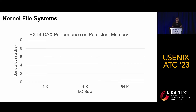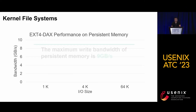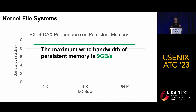We use a concrete example to illustrate this overhead. We run a traditional kernel file system named EXT4 on top of Intel Optane Persistent Memory, specifically the DAX version of EXT4, which leverages the byte-addressability of persistent memory. We would like to see whether EXT4 can fully leverage the capability of persistent memory. We first measured the upper bound write bandwidth of persistent memory, which is 9 gigabytes per second, shown as the green line in this figure. Then we use three different I/O sizes — 1K, 4K, and 64K — to measure the sequential write bandwidth of the EXT4-DAX file system.